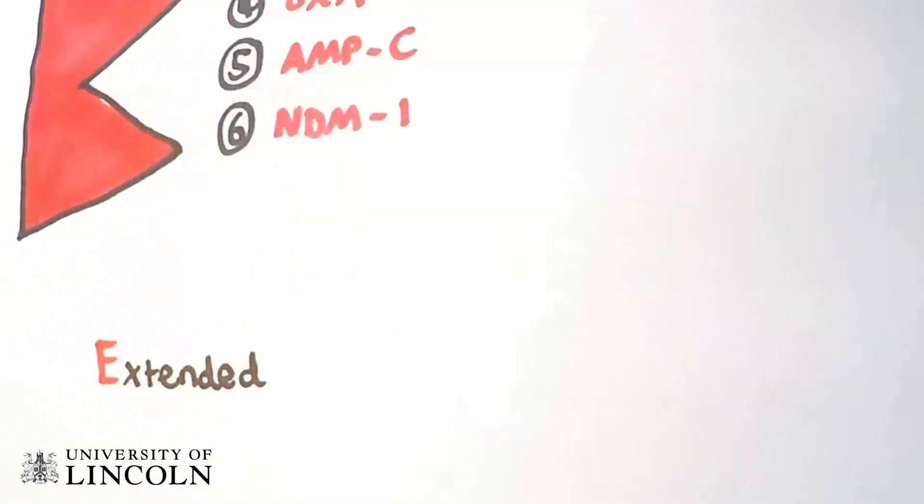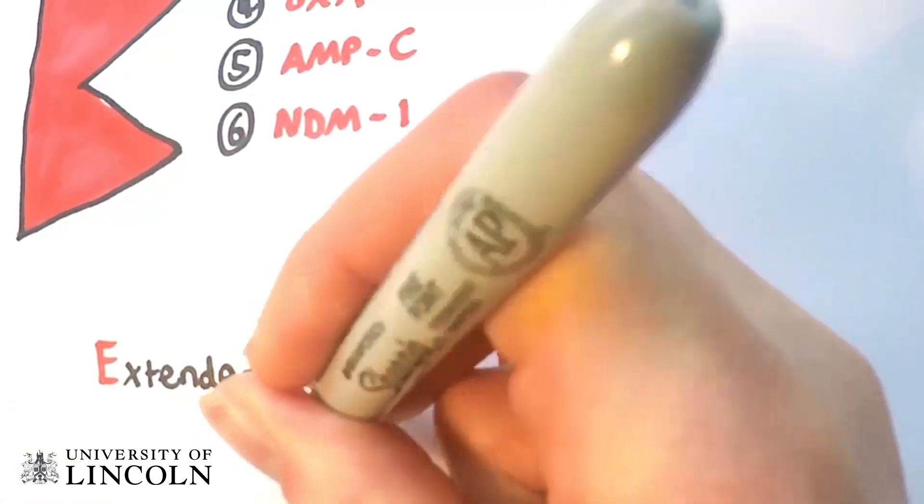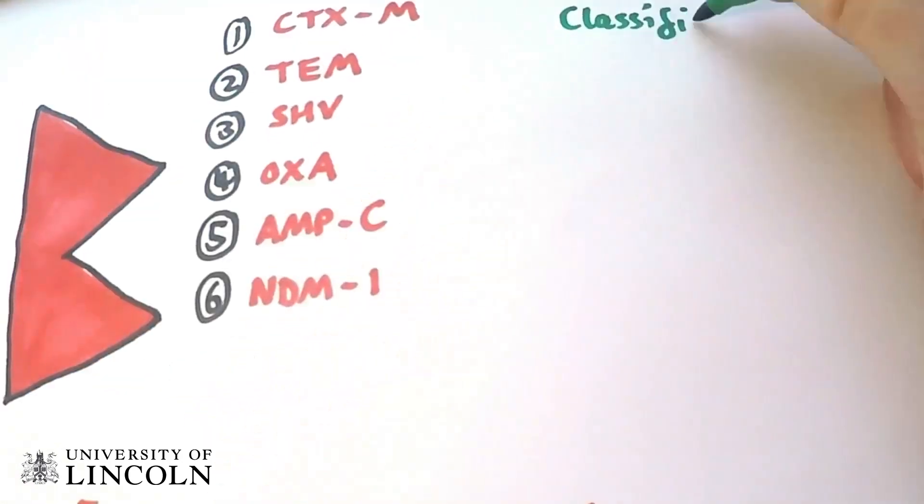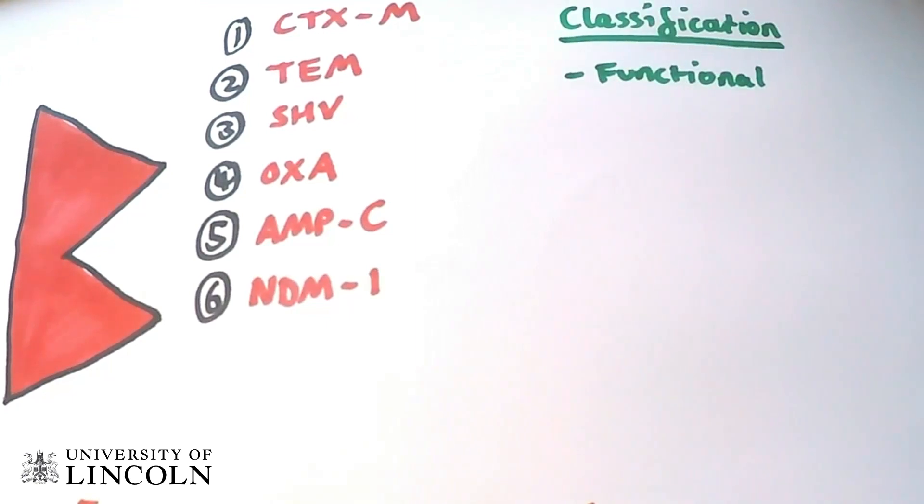These types can also be classed as extended spectrum beta-lactamases, which confer resistance to many different beta-lactam antibiotics. There are two different classification systems for beta-lactamases.